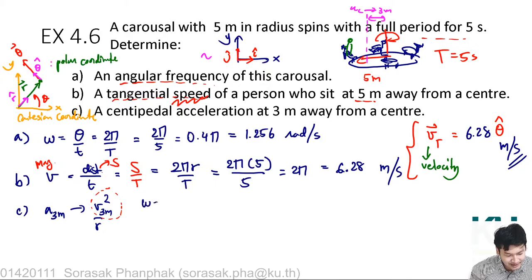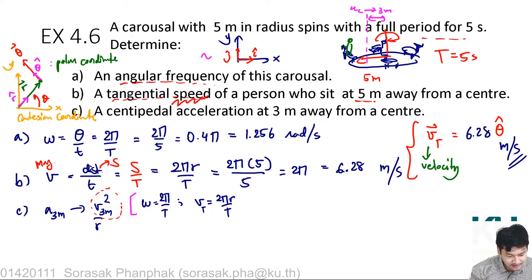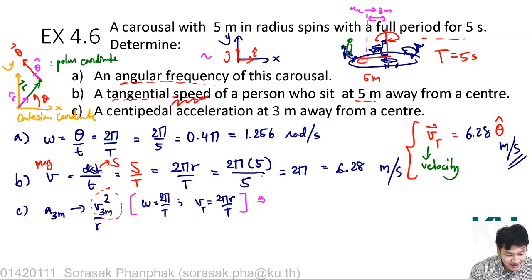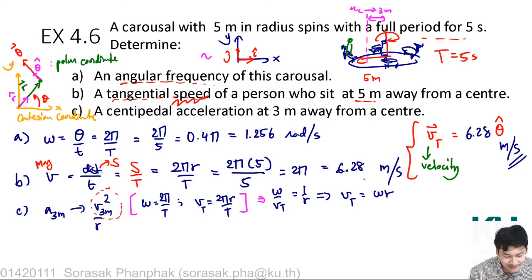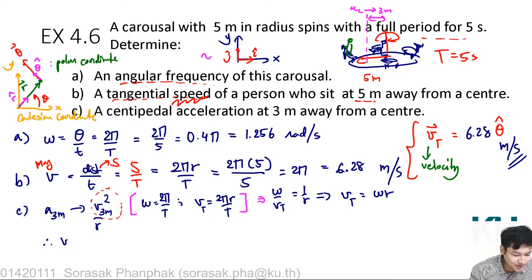Using the relation ω = 2π/T and tangential velocity vt = 2πr/T, we can find the link between ω, v, and r. Dividing ω by vt gives 1/r, so vt = ωr. If you want to find velocity at any radius, multiply omega by that radius. To find vt at 3 meters, substitute omega, which we found in part A.